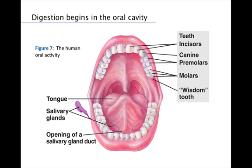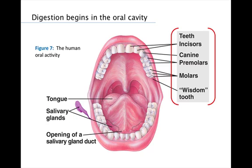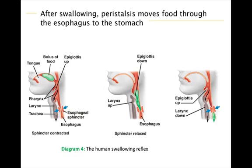Digestion begins in the oral cavity in the form of chemical and mechanical digestion. The saliva excreted by the salivary glands contains a digestive enzyme, amylase, which begins to break down the starch in your food — this is chemical digestion. Mechanical digestion occurs by the chewing and smashing of food performed by the teeth. Now let's describe what happens after the food has gone past the oral cavity.